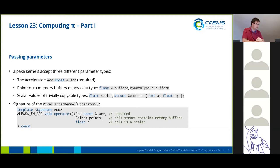For our pixel finder kernel, the signature of the operator will look like this. We first pass in the accelerator which is the prior parameter. Then we're going to pass in a point struct and then the radius of the circle.